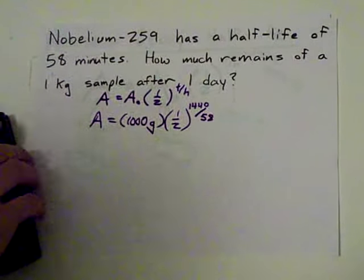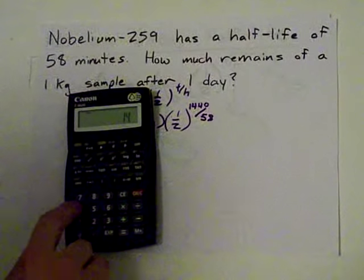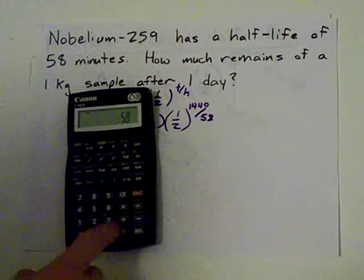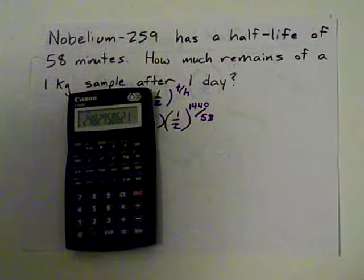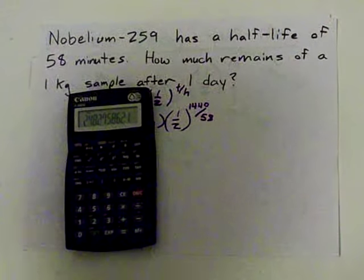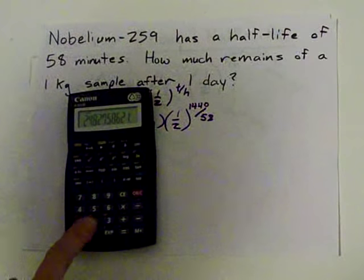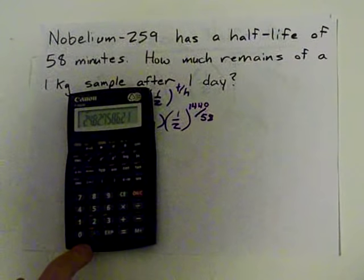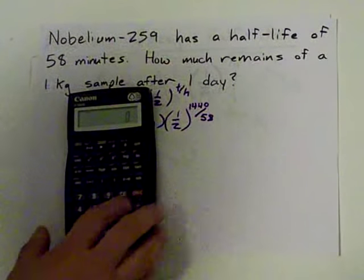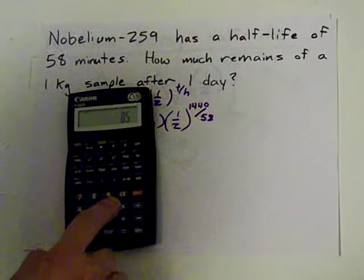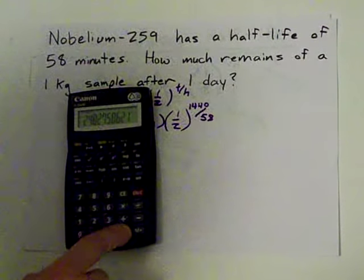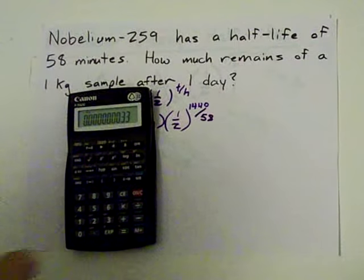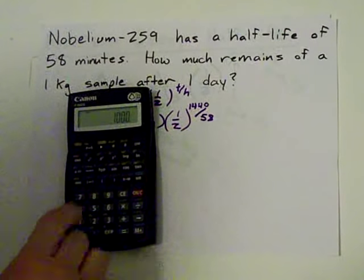Then we put this into our calculator. 1440 divided by 58. This is how many half-lives have gone by. We're going to take 0.5 to the power of that. We're going to do that. 0.5 to the power of 1440 divided by 58. I get this, and I multiply that by 1,000.